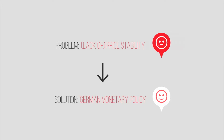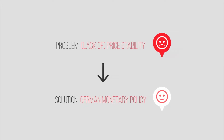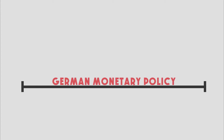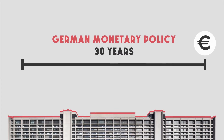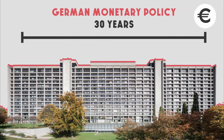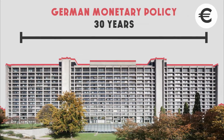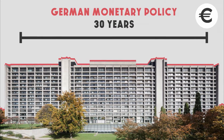In this search for stability, German monetary policy became progressively the reference for the rest of Europe. The progressive adoption of German monetary policy took 30 years. The euro is the outcome of this long process — a single European currency defined along the lines of the German central bank.